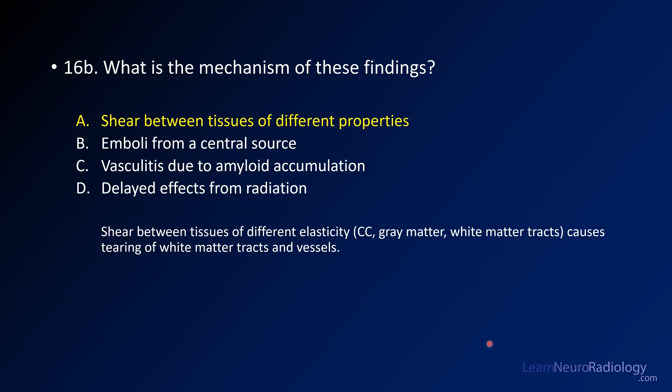The mechanism of these findings, as we talked about, is shear between tissues of different properties. When tissues have different properties, they react to trauma differently — they compress and deform differently — and you get injury between those interfaces.